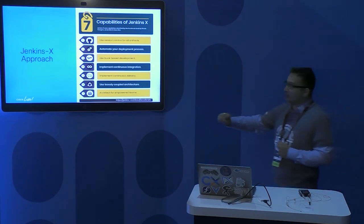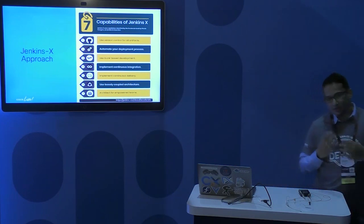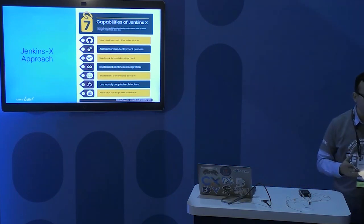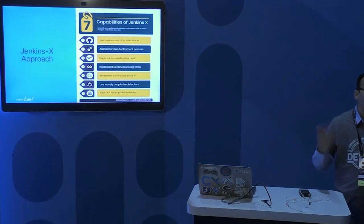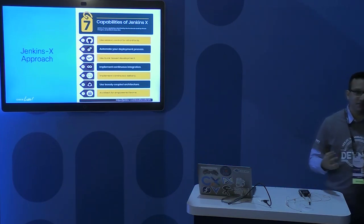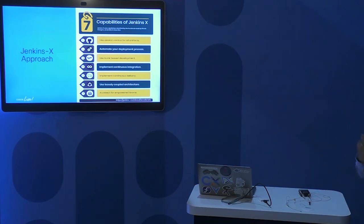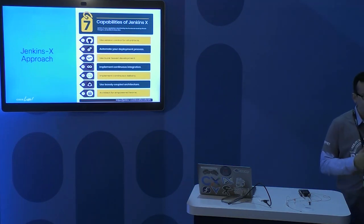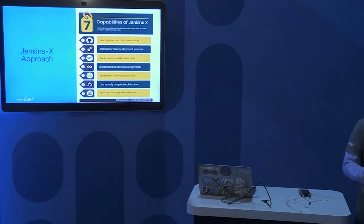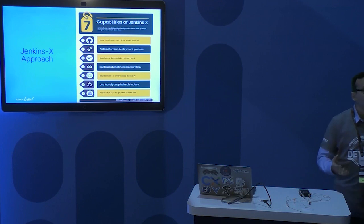In terms of continuous delivery, Jenkins X provides you semantic versioning. For those unfamiliar, if you see version 1.2.3 — one stands for your major version, two stands for your minor version, and three stands for your patch. Jenkins X takes care of maintaining that, and every time you promote an environment and your pull request gets merged into master, Jenkins X publishes that as a Git tagged release with all the information you need. Semantic versioning and Git tagged releases come out of the box.